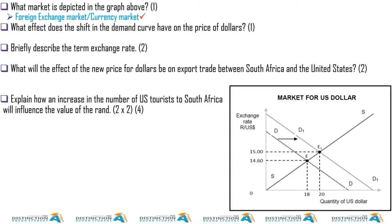If you say 'foreign exchange' on its own, that is different from 'foreign exchange market.' Foreign exchange is the act of exchanging one currency for another, whereas the foreign exchange market is a place where one currency is traded for another. So foreign exchange is like a verb — an action — and foreign exchange market is a noun — a place.